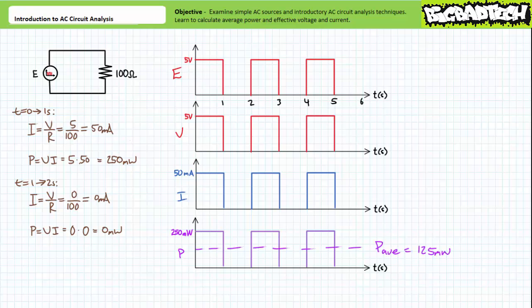Additionally, it should be evident, given that the load experiences equal periods of full current and full power and no current and no power, that one could rightly state that the load on average dissipates half power, or 125 milliwatts — being equal spans of 250 milliwatts and zero milliwatts averaged over this analysis period.